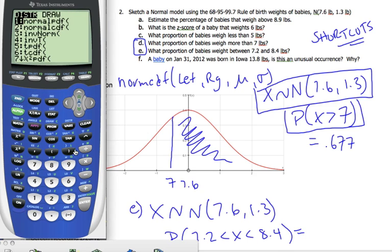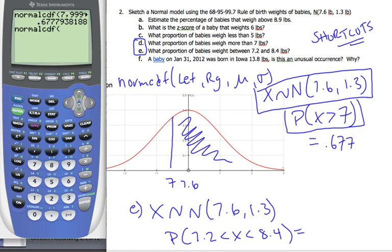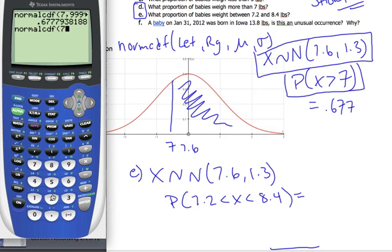Second normal CDF. I go, my values of, what are my values I want, 7.2, comma, 8.4, comma.